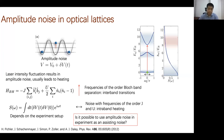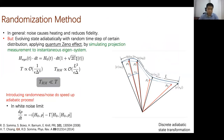Someone mentions USTC's boson sampling work by the Pan group in Shanghai. The speaker agrees, noting that people still argue whether that constitutes a general quantum computer or a specially designed quantum machine. Another question: has anyone seen analogies between the use of noise in quantum systems and stochastic differential equations (SDEs) from classical physics?